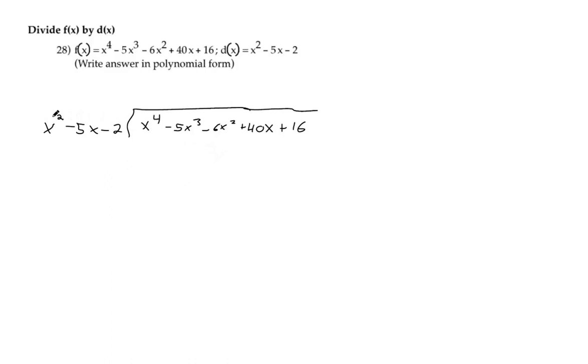Then to make the division happen, you want to find out how many times, what do you have to multiply x squared by to turn it into x to the fourth? So x squared times x squared would make x to the fourth.